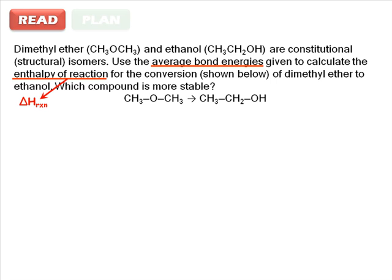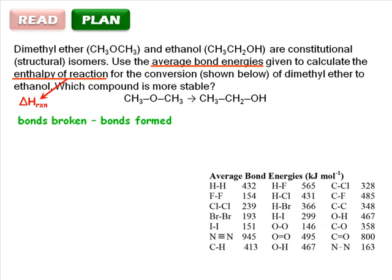Let's make a plan. We know that the delta H of reaction is equal to the sum of the energies of the bonds that were broken minus the sum of the energies of the bonds being formed. So we'll need to pull out the table of bond energies as a reference.